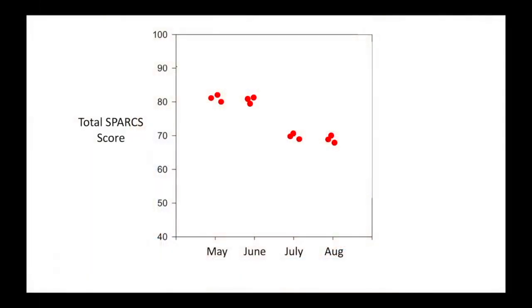One of the real values of people testing their vision at home with SPARCS is that it is easy for them to repeat the test. Often in the office, if we think a test result may be changing but we are not sure, we ask them to come back in a few weeks and repeat it. By testing at home with SPARCS, you can ask your patient to repeat the test more conveniently. You can ask a patient to take SPARCS several times over a few days to cluster their information, which should help you be more confident in determining if someone is stable or getting worse.